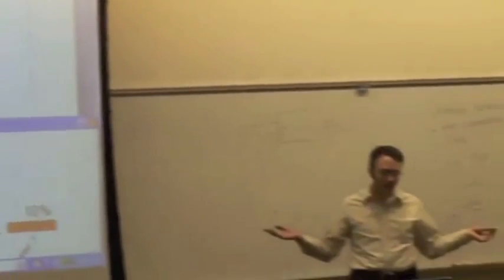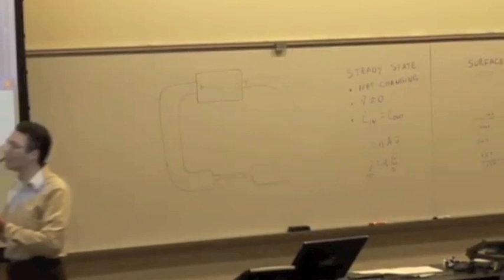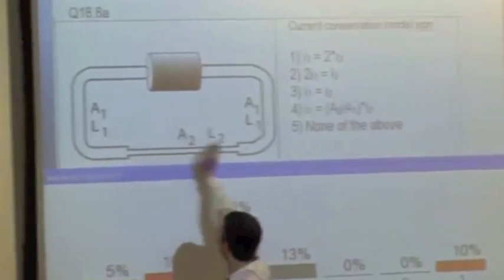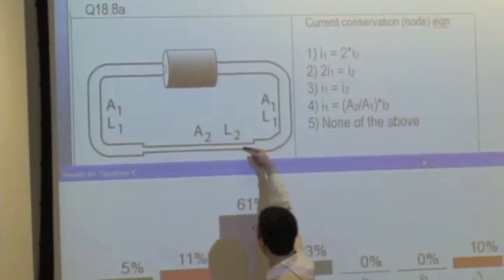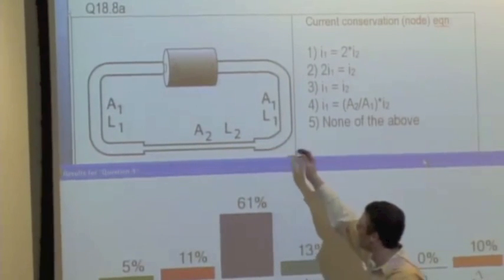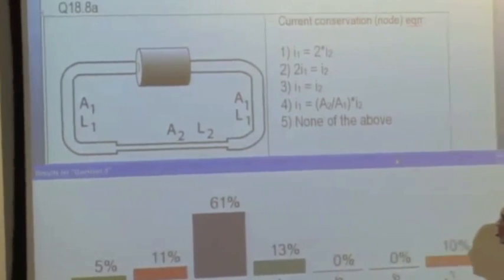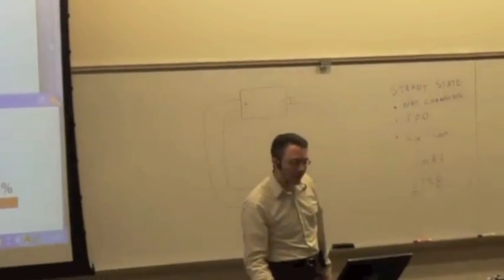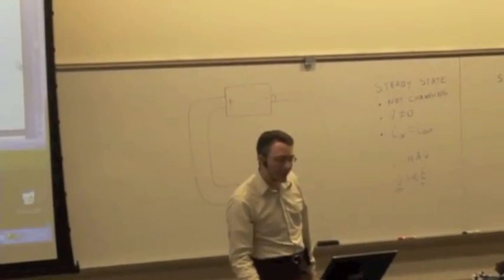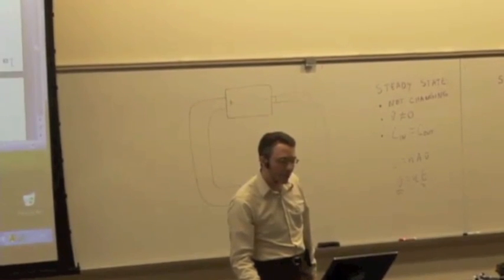They've got to be equal. They've got to be equal. So you have the same number of electrons flowing into the thin wire. I guess it's going this way. Into the thin wire per second as you have them flowing out of the thick wire per second. The currents have to be equal. But what's different? What would have to be different if the two currents are equal but the thicknesses are different? What's different?